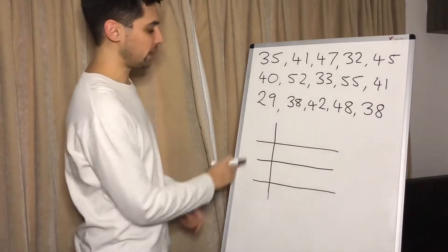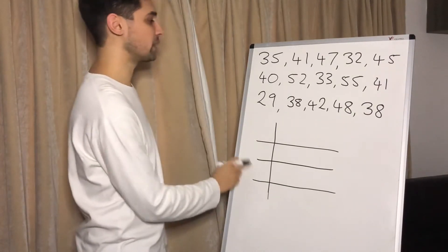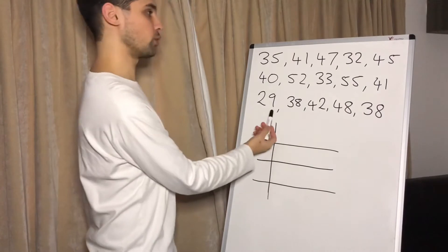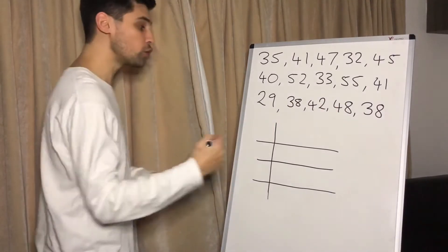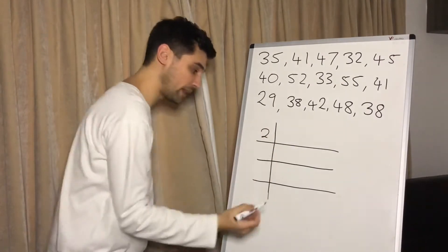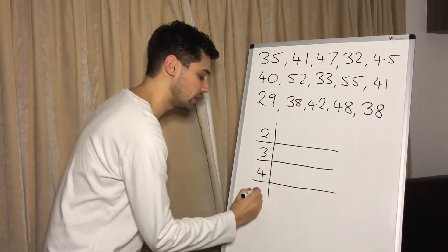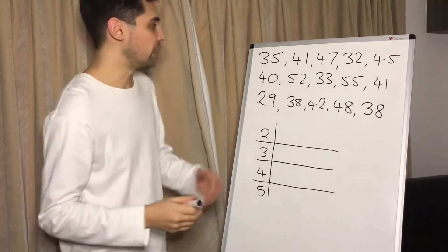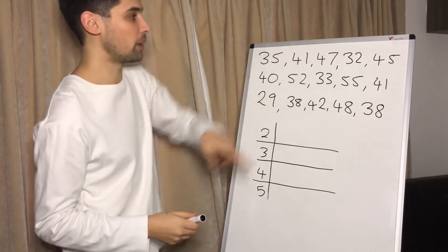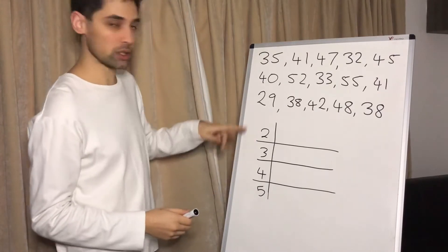So what we're going to start with is the tens here. So obviously we can see these numbers range from what's the smallest 29 to 55 perhaps. So we're going to do rows based on 20s, 30s, 40s, and 50s. So generally speaking, whatever the first number of each of these numbers is, those will be the first column.